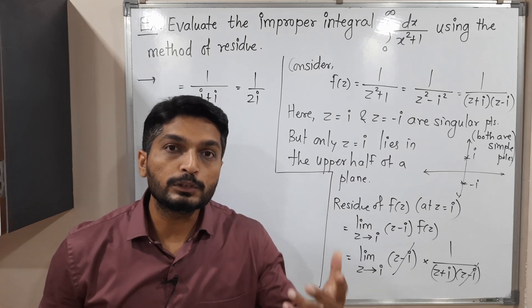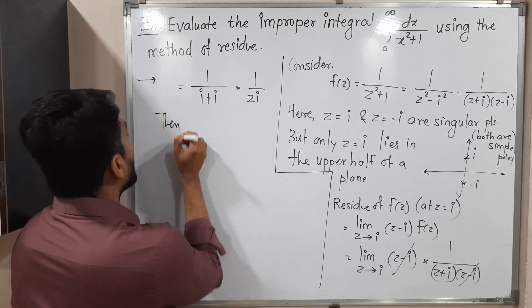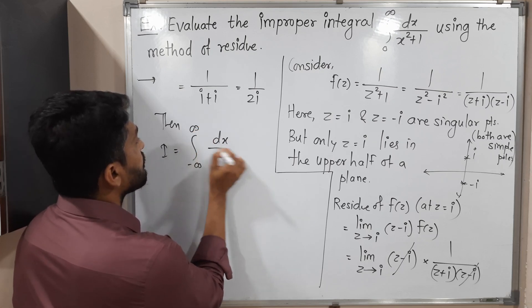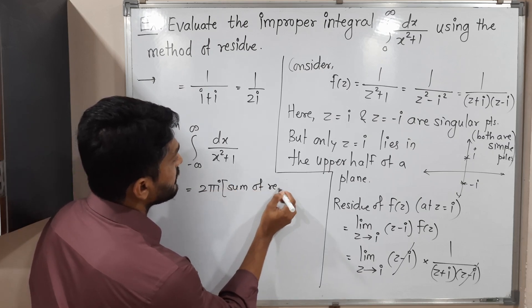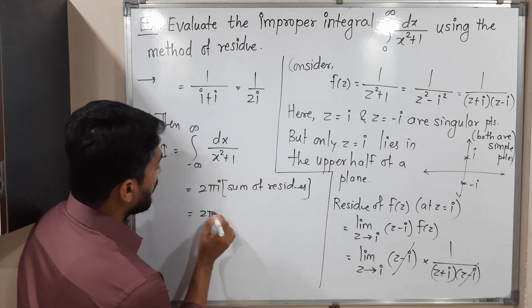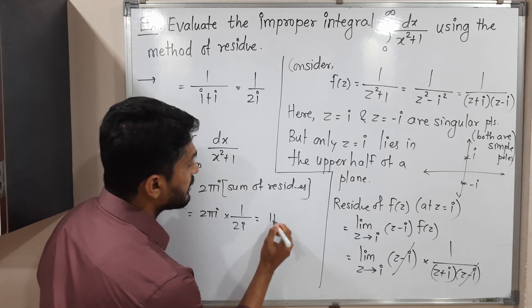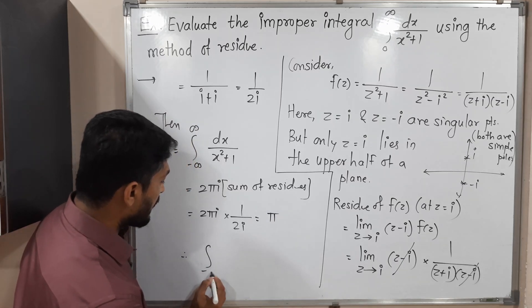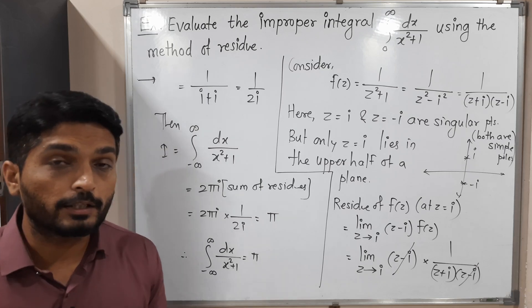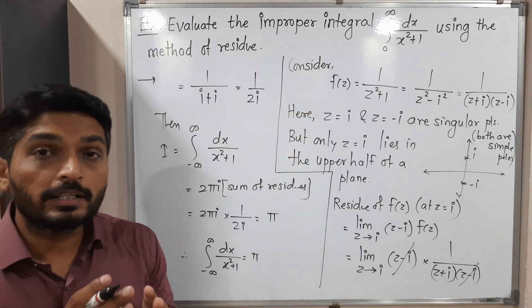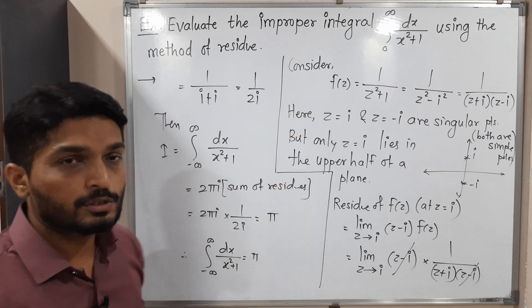We have only one singular point in the upper half plane. Going to the last step: the value of integral I = integral from −∞ to ∞ of dx/(x²+1) equals 2πi times the sum of residues = 2πi × (1/2i). The 2i cancels, giving simply π. So the integral from −∞ to ∞ of dx/(x²+1) = π. But the given integral has different limits, so we need one more step.